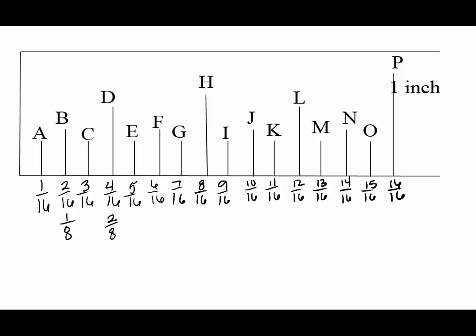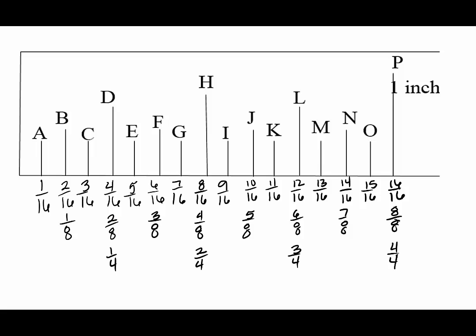1/8th, 2/8ths, 3/8ths, 4/8ths, and so on. The next row will be 4ths. 2/8ths reduces to 1/4th by dividing the top and the bottom by 2. So now reduce all the even 8ths down to 4ths.